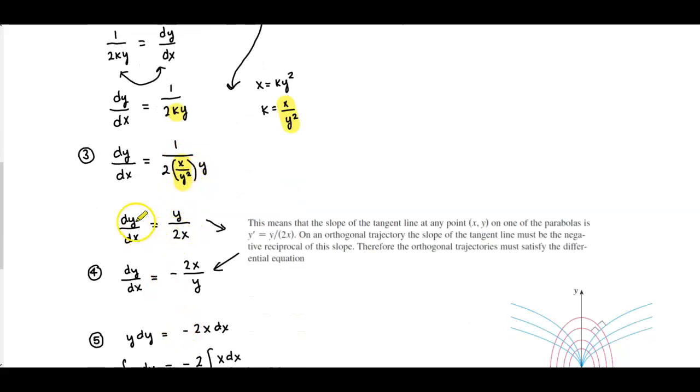By simplifying we end up getting dy over dx which is equal to y over 2x. What this means is that the slope of the tangent line at the point xy on one of the parabolas is y prime which is equal to y divided by 2x. Now the key thing here is that an orthogonal trajectory, the slope of the tangent line must be the negative reciprocal of this slope. Therefore the original orthogonal trajectories must satisfy the differential equation.